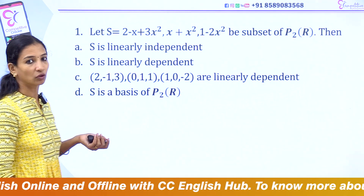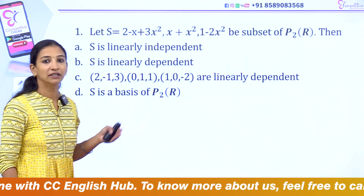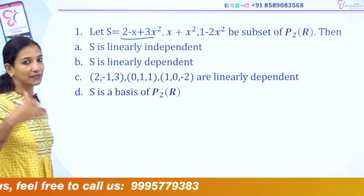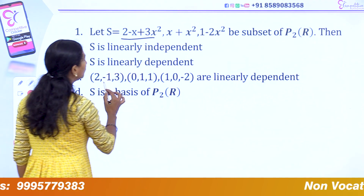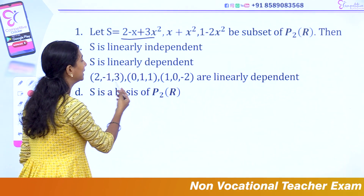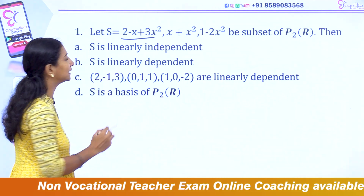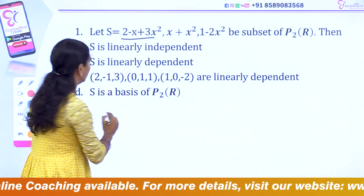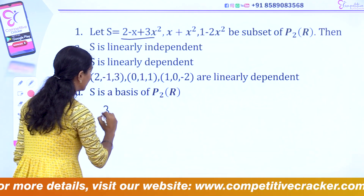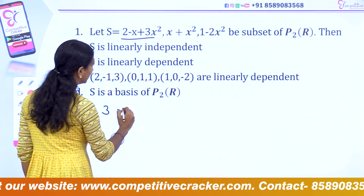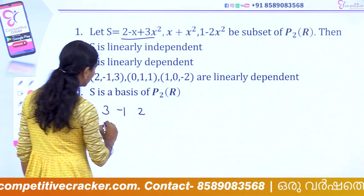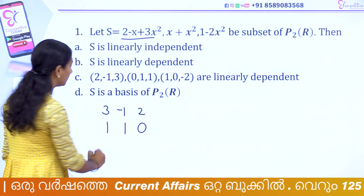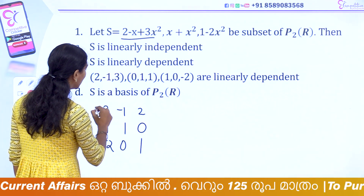So how do we solve this question? We use the determinant method. Let's do it: 3x² − x + 2. The x² coefficient is 3, the x coefficient is −1, and the constant is 2. Second: x² coefficient is 1, x coefficient is 1, constant is 0. Third: −2, 0, 1. We will determine the determinant.